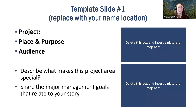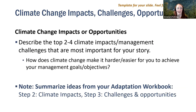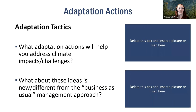The first slide will introduce your project, place and purpose, and audience. The key goals are to describe what makes this project area special and to share the major management goals that relate to your story. You're welcome to customize these slides however you see fit. The next template slide outlines the top two to four climate impacts and management challenges most important for your story. The key question is: how does climate change make it harder or easier for you to achieve your management goals? Here you will summarize your ideas from your adaptation workbook in step two, climate impacts, and step three, challenges and opportunities. The next slide outlines your adaptation actions.